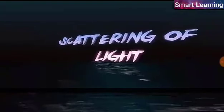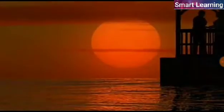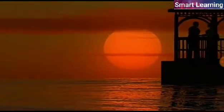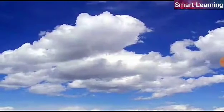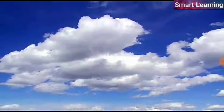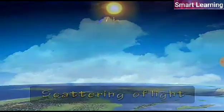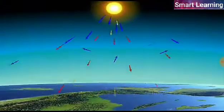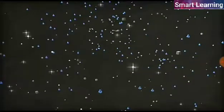Scattering of light. Have you ever thought why the sky looks blue? Why the sun appears red at the time of sunrise and sunset? Why clouds appear white? This is because of the phenomenon of scattering of light. Scattering of light is the phenomenon of the change in the direction of light on striking with an obstacle like a dust particle, water droplets, etc., or any colloidal particle.